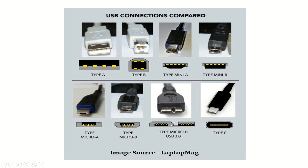This is the Micro USB 3.0, the advanced version of Type Micro B. If you look at the connector, an extra section with additional pins has been added alongside the standard Micro B portion. These extra pins are for data transmission at higher speeds. You can see this connector on multiple external hard drives.